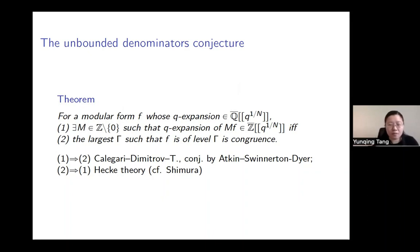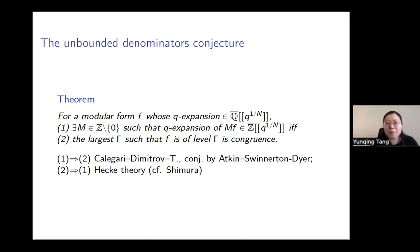Let me remark on why congruence modular forms have bounded denominators. When we have a congruence level, we have the classical Hecke theory, which decomposes holomorphic modular forms into sums of Hecke eigenforms. The Fourier coefficients of normalized Hecke eigenforms are algebraic integers. Hence for congruence modular forms, after reducing to the holomorphic case and decomposing into Hecke eigenforms, we get bounded denominators. This also motivated the conjecture in the same paper of Atkin, Swinnerton-Dyer, and Dyer.